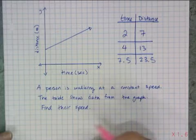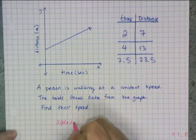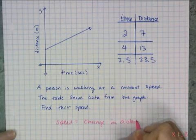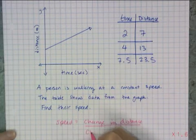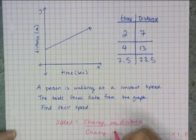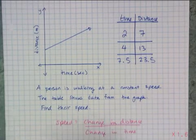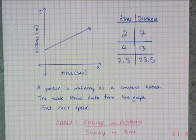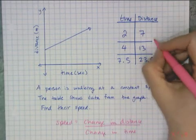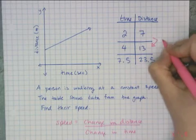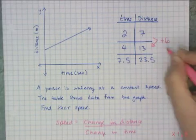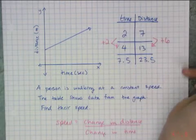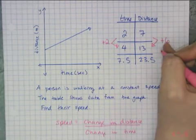But speed is the change in distance over the change in the time. So if I go back to this table and I find the change in distance from this 2, 7 to the 4, 13, their distance increased by 6 when their time increased by 2.